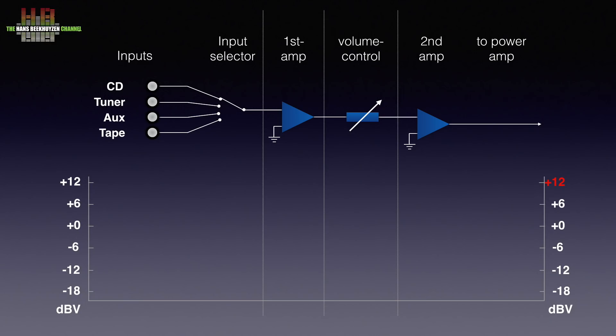Well, let's assume we connect a CD player that outputs 2 volts at the loudest signal, as defined by the Sony and Philips Redbook specifications. In audio we like to work in dBs, and 2 volts equals plus 6 dBV. Since the input selector has no active elements, the level stays at plus 6 dBV maximum.